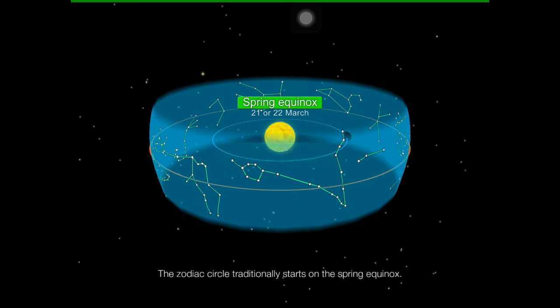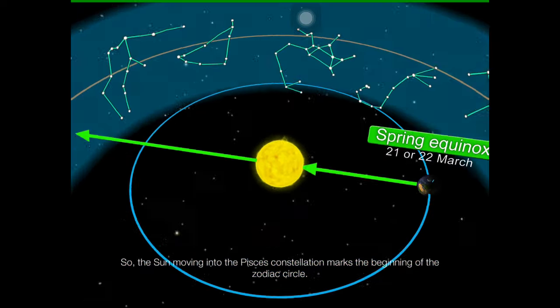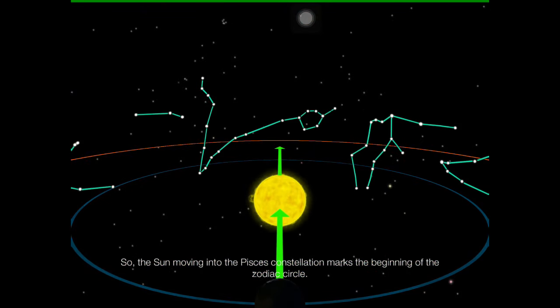The Zodiac Circle traditionally starts on the spring equinox. So, the Sun moving in the Pisces constellation marks the beginning of the Zodiac Circle.